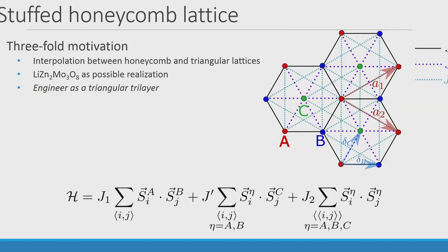Another interesting possibility is to engineer this lattice. You can engineer honeycomb lattices from bilayers of triangular lattices. Similarly, the stuffed honeycomb can be made from a trilayer of triangular lattices in ABC stacking — the A sublattice (red spins), B, and C each form a triangular lattice. This naturally gives you a J1, J-prime, J2 model where J2 is the intralayer coupling. No materials realizations are known yet, but it would be very interesting to pursue.